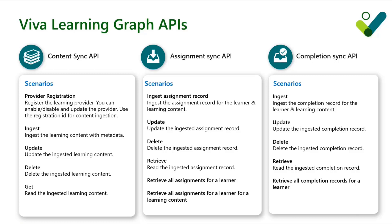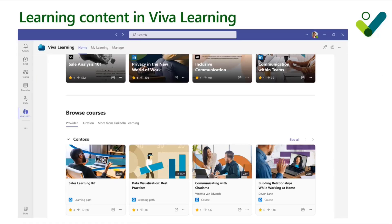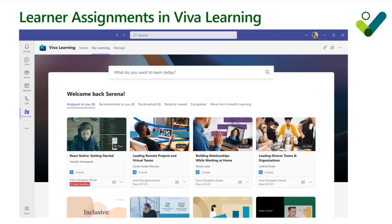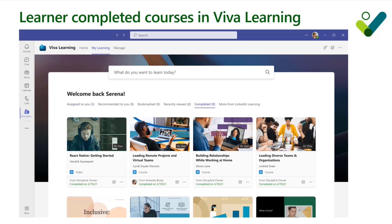The completion sync APIs help sync learners' completed trainings within Viva Learning. Supported scenarios include ingesting a completion record for a learner and learning content, and also updating, deleting, and retrieving the ingested completion record, as well as retrieving all completion records for a learner. After ingestion, the content appears in the Browse Courses section under the provider section — for example, a Contoso carousel showing all courses ingested for that provider. Learner assignments appear in the My Learning tab under the Assigned to You section, and completed courses appear in the My Learning tab under the Completed section.